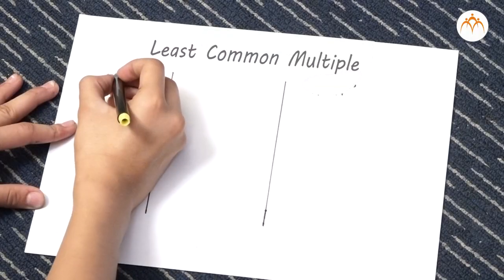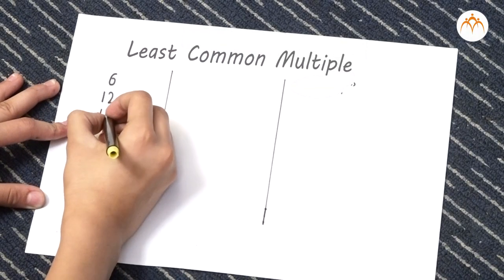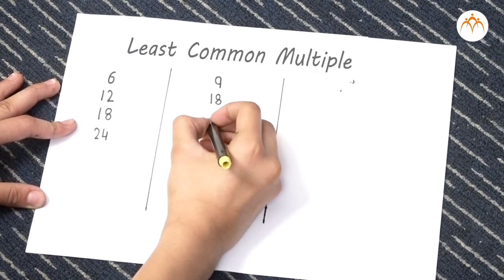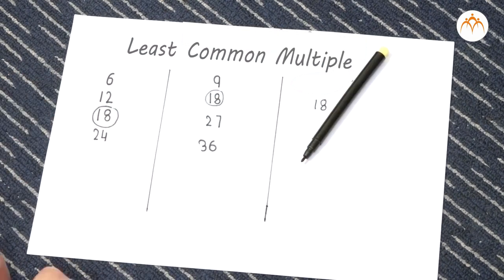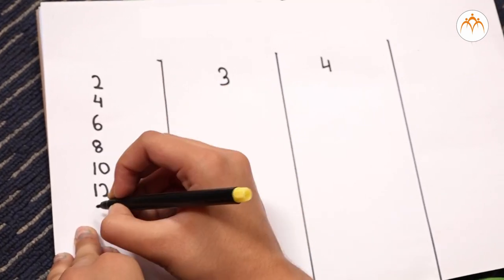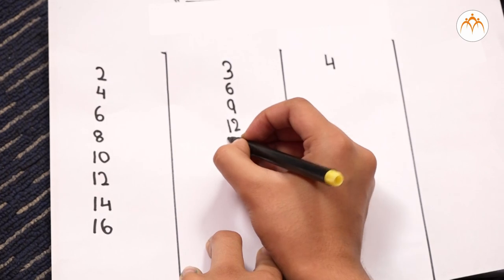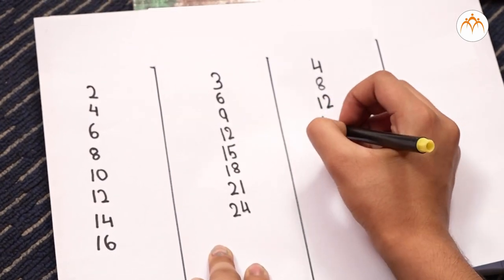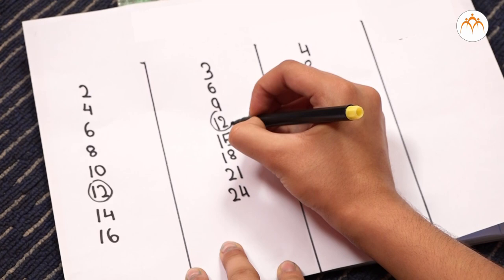LCM of 6 and 9 means the smallest number that is divisible by both 6 and 9 — that means the smallest number from the tables of 6 and 9, which is 18. Well done, Sai. Now tell me the LCM of 2, 3, and 4. LCM for 2, 3, and 4 is the smallest number which comes in the tables of 2, 3, and 4. If I write these tables: 2, 4, 6, 8, 10, 12 ... 3, 6, 9, 12, 15, 18 ... 4, 8, 12, 16, 20, 24. So the LCM is 12. Now you understood LCM properly.